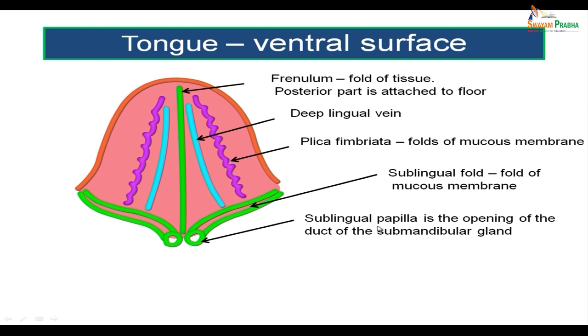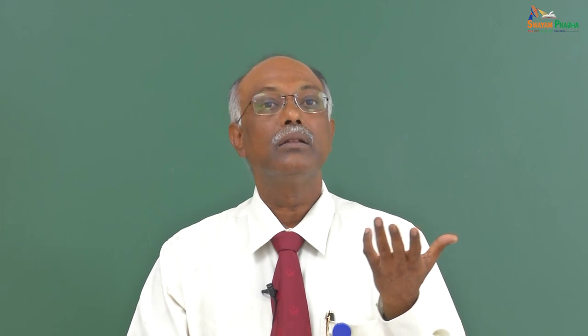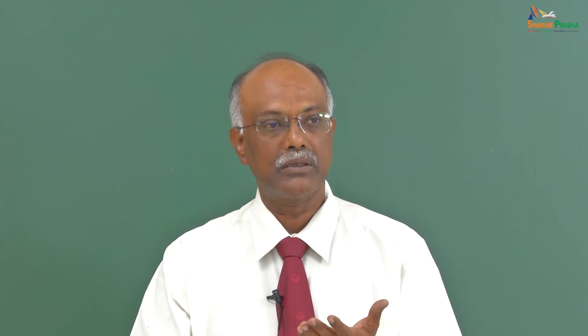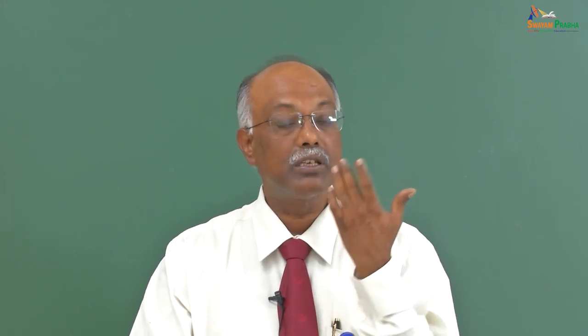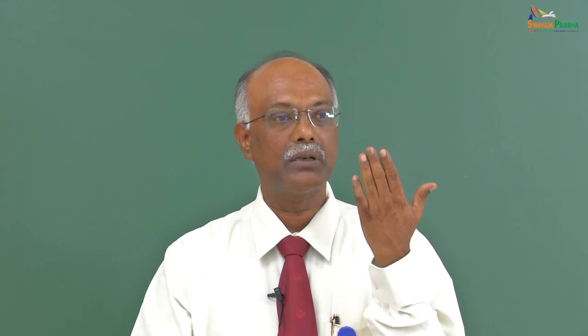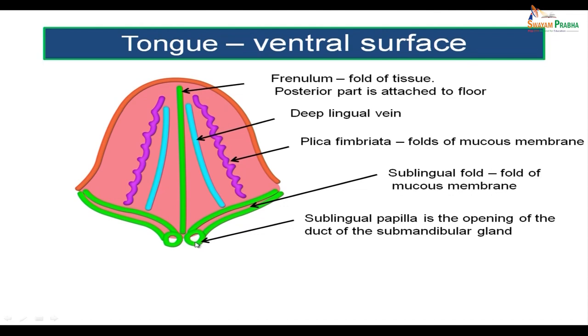The sublingual papilla is the opening of the submandibular ducts. The sublingual glands open on the floor of the mouth on either side by multiple small openings. The parotid gland has a definite duct — the parotid duct — which opens into the vestibule of the mouth opposite the upper second molar. The submandibular gland opens into the sublingual papilla, and the sublingual glands open by multiple small openings on the floor of the mouth.